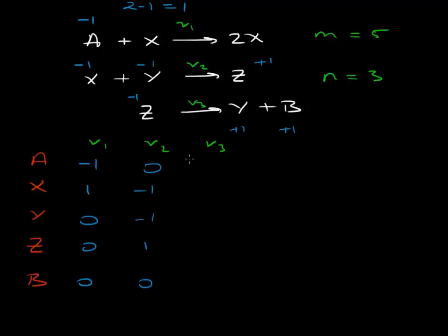And the final reaction, we don't have anything involving A. We don't have anything involving X. We do have a Y, plus 1. We do have a Z, minus 1. And we do have a B, plus 1. And so there we have our stoichiometric matrix for this system.